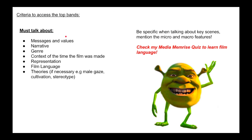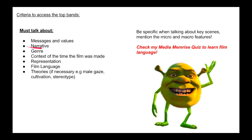To access the top bands you must talk about messages and values, narrative, genre, context of the time, representation, and film language when analysing key scenes, and some theories if necessary. Theories do add extra marks and adding the names of theorists would be great too. They will ask you about the messages and values of the opening sequences, the way the narrative works, how suspense is used, and so on.